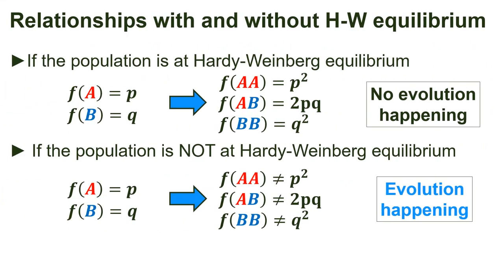This example is useful because we are often interested in whether a population is evolving. If the population is at Hardy-Weinberg equilibrium, then the allele frequencies can be used to predict the genotype frequencies, and we have good evidence that no evolution is happening. But if the population is not at HWE, the allele frequencies can't be used to predict the genotype frequencies, and we have evidence that some kind of evolution is happening.